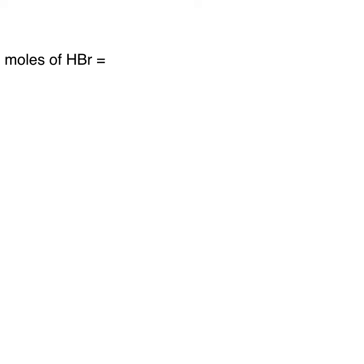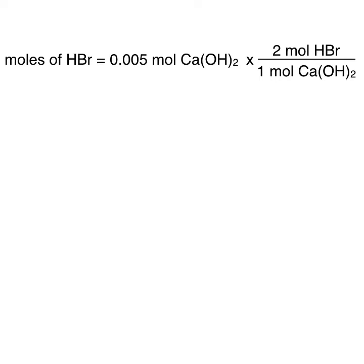We can now use this to determine how many moles of hydrogen bromide were neutralized. The moles of hydrogen bromide equals the moles of calcium hydroxide, 0.005, multiplied by the molar ratio of 2 over 1 from our balanced reaction equation. The moles of calcium hydroxide cancel out, leaving us with 0.01 moles of hydrogen bromide.